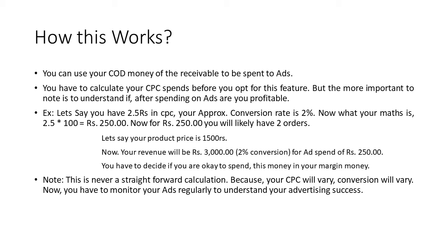The math is: 2.5 rupees multiplied by 100 equals 250 rupees. For 250 rupees spent, you are likely to get 2 orders because we've considered a conversion rate of 2%. Now let's say your product price is 1,500 rupees. Your revenue will be 3,000 rupees because of that 2% conversion rate.